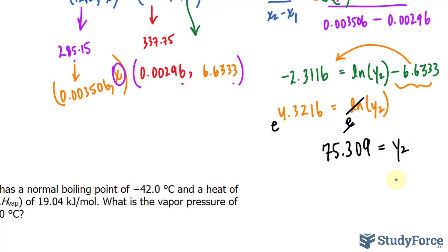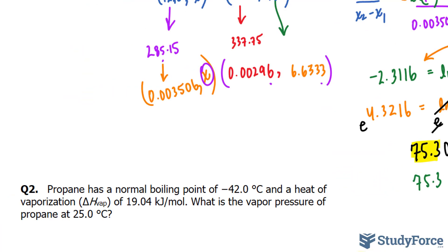That number right there represents the pressure at 12 degrees. Now of course, this needs to be to three significant figures, so we'll stop writing after that 3, and it will be 75.3 torr. And there you have it.